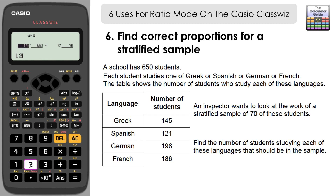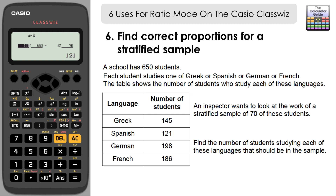Press AC once — don't clear everything — and simply change 145 to 121 for Spanish, press equals again, and convert to decimal: 13 students for Spanish. You can continue changing just that first number: 198 for German, 186 for French, or whatever count applies to each category or stratum in your particular sample.